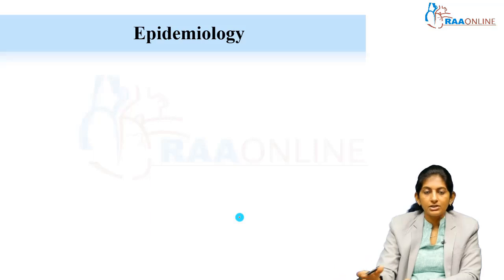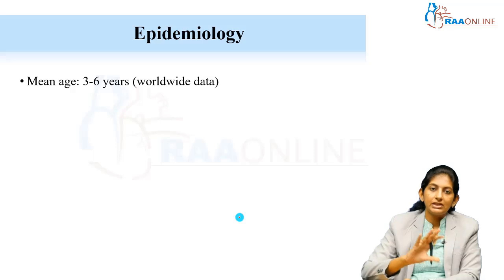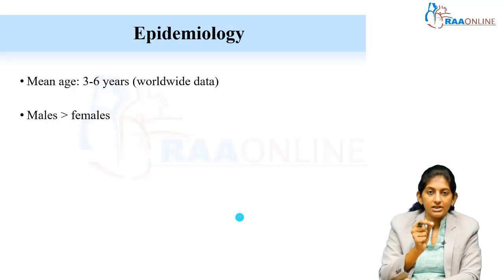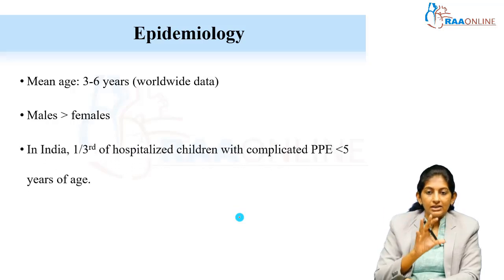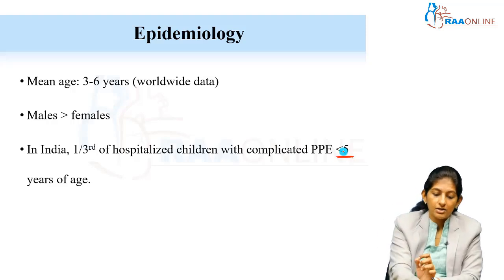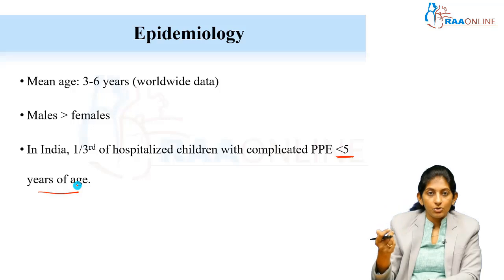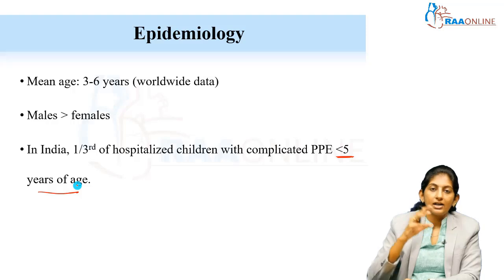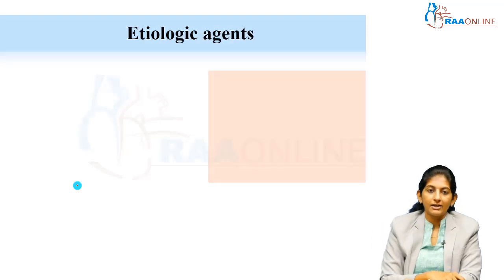Regarding epidemiology, we mostly see affected children between three to six years of age, with a slightly increased prevalence among boys compared to girls. In India, most children presenting with pleural effusion are under five years of age, which reflects the high burden of pneumonia in that age group — and these are the children admitted with parapneumonic effusions.